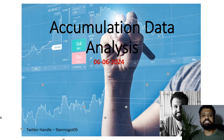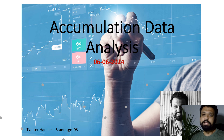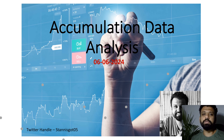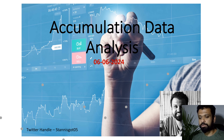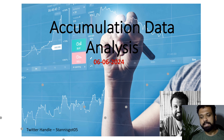Hi everyone, welcome to the accumulation data analysis for June 6th. Today was a very good day for the bulls, especially the small and mid caps — they were up almost two to three percent. Although the Nifty was up like almost one percent, the main action was in the broader market. We'll see how the data was for today and also look at how one needs to play this market henceforth.